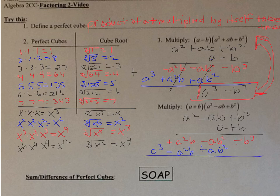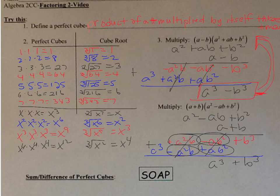Adding up: +b³, −ab²+ab²=0, +a²b−a²b=0, leaving +a³. So the result is a³+b³ — the sum of perfect cubes — and when I factor the sum of perfect cubes, I get (a+b)(a²−ab+b²).